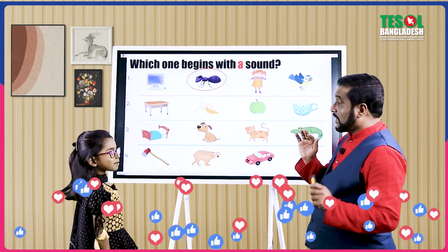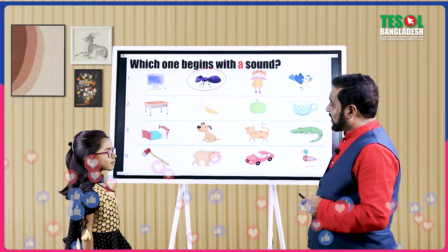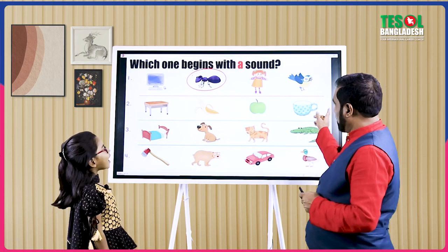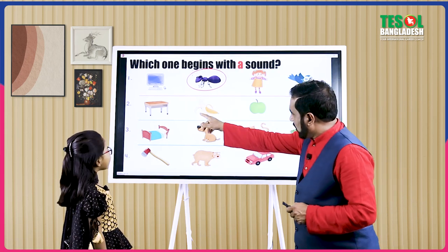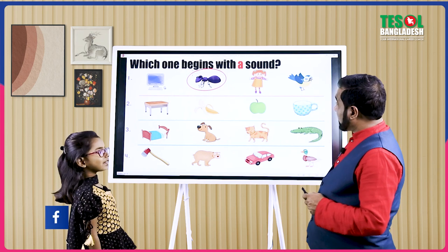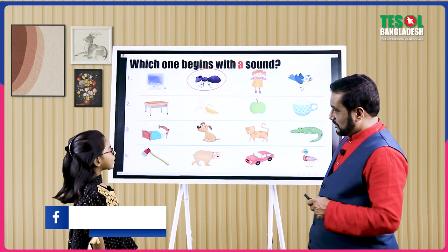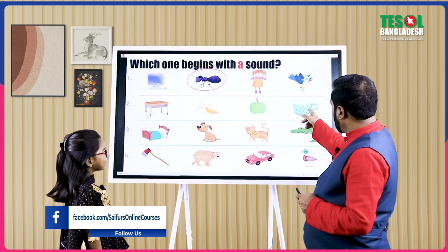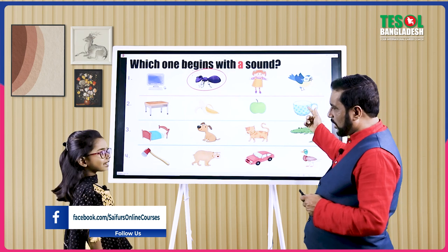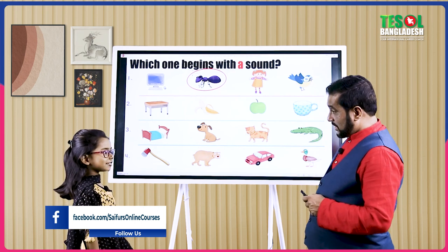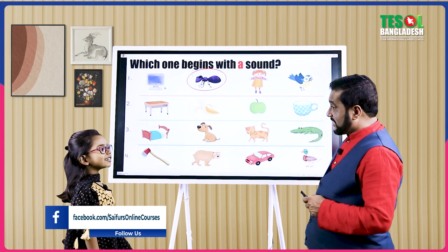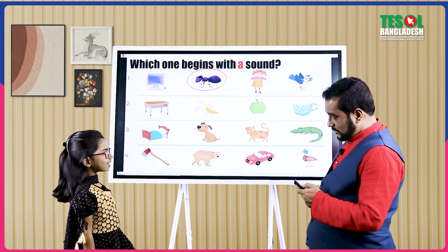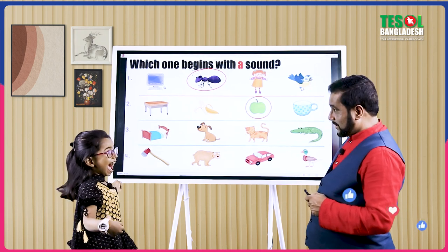And now let me ask you boys. Okay, the second row. Which one of the four pictures begins with A sound? Apple. Are you sure? Yeah. But the car — what does cup begin with? C. So that's not the right one, right? Let's see whether you are right or wrong. All right.